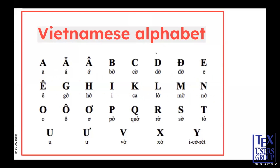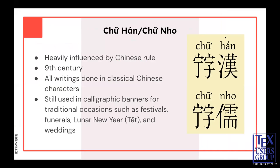This is the Vietnamese alphabet we know today and that I learned. However, the language did not always look this way. Its origins can be attributed to heavy Chinese influence with the creation of what is called Zhu Han, or Zhu Nyo. Under Chinese rule from around the 9th century, all writings were done in classical Chinese characters, and this was the official writing system of the region and of the court. It would continue to hold this position until the beginning of the 20th century, when it was replaced by a different writing system. Zhu Han and Zhu Nyo are still used today in calligraphic banners for traditional occasions such as festivals, funerals, Lunar New Year's, and weddings. Here is an example of what it would have looked like.